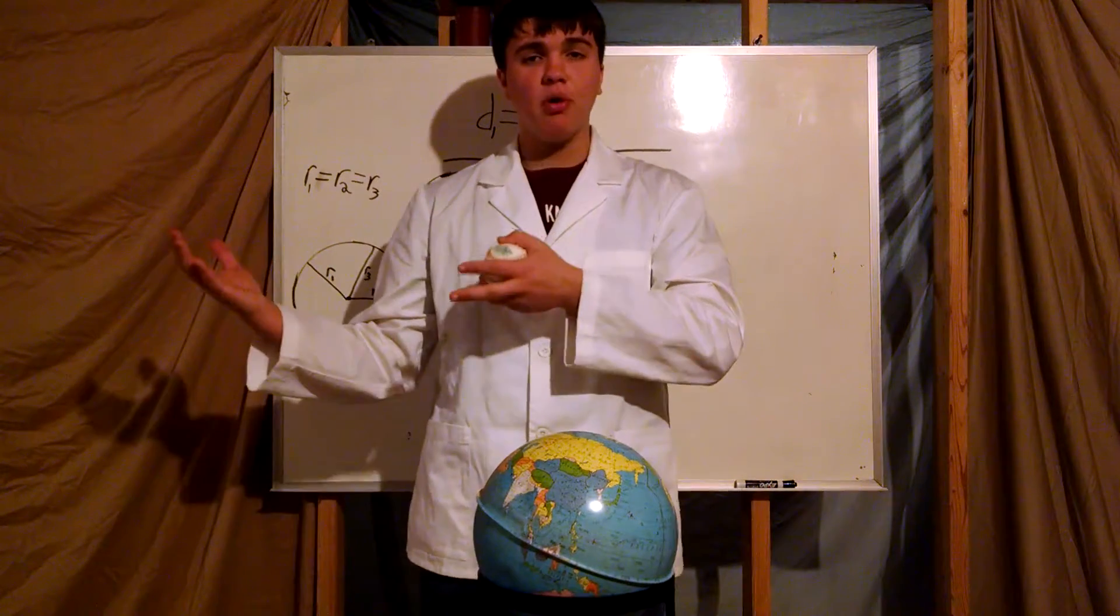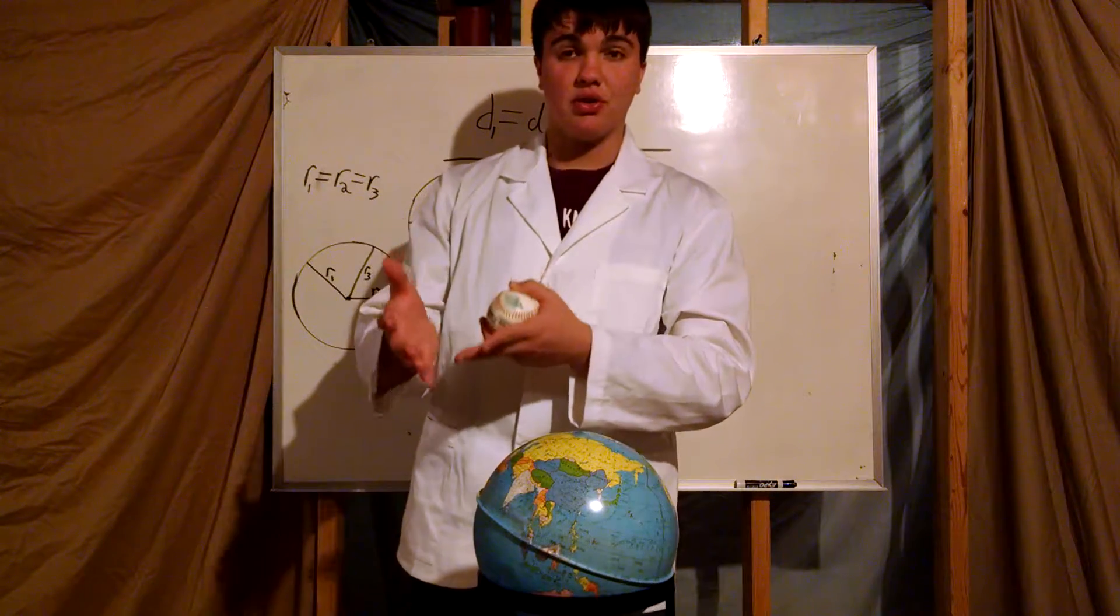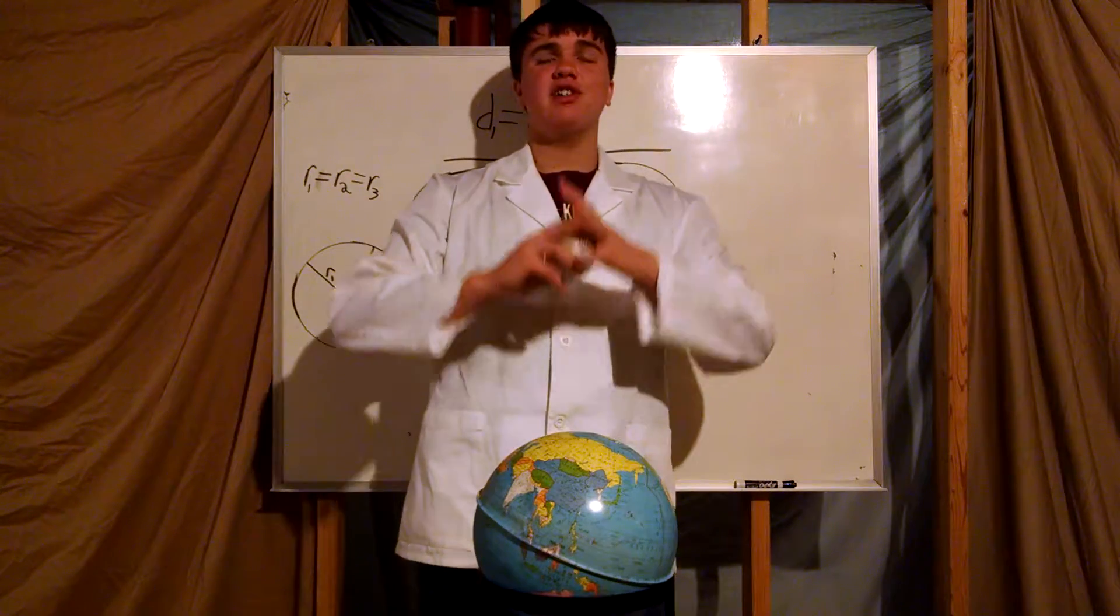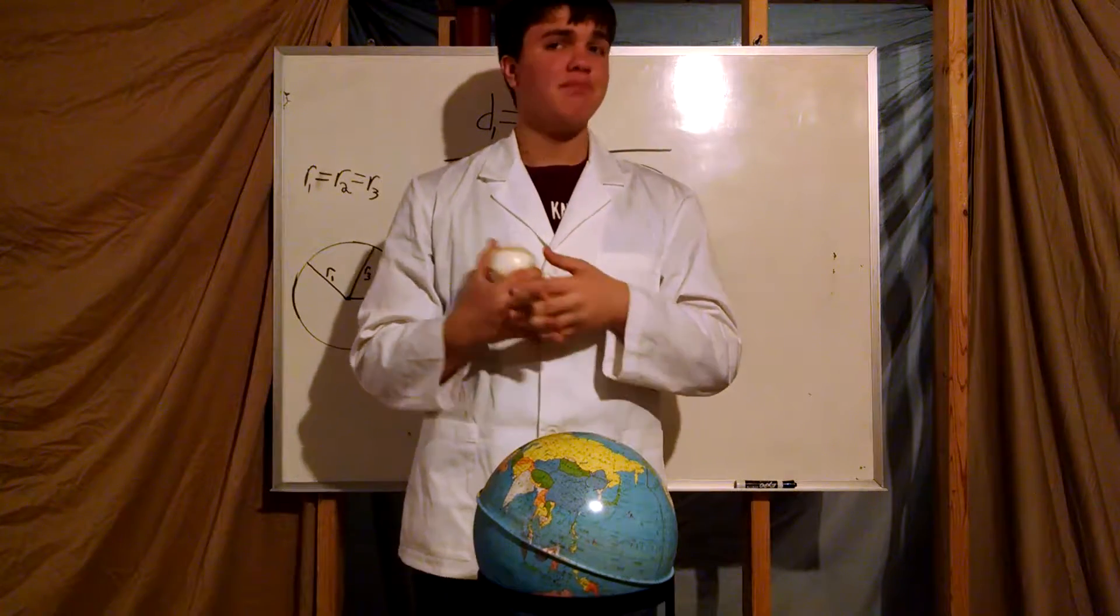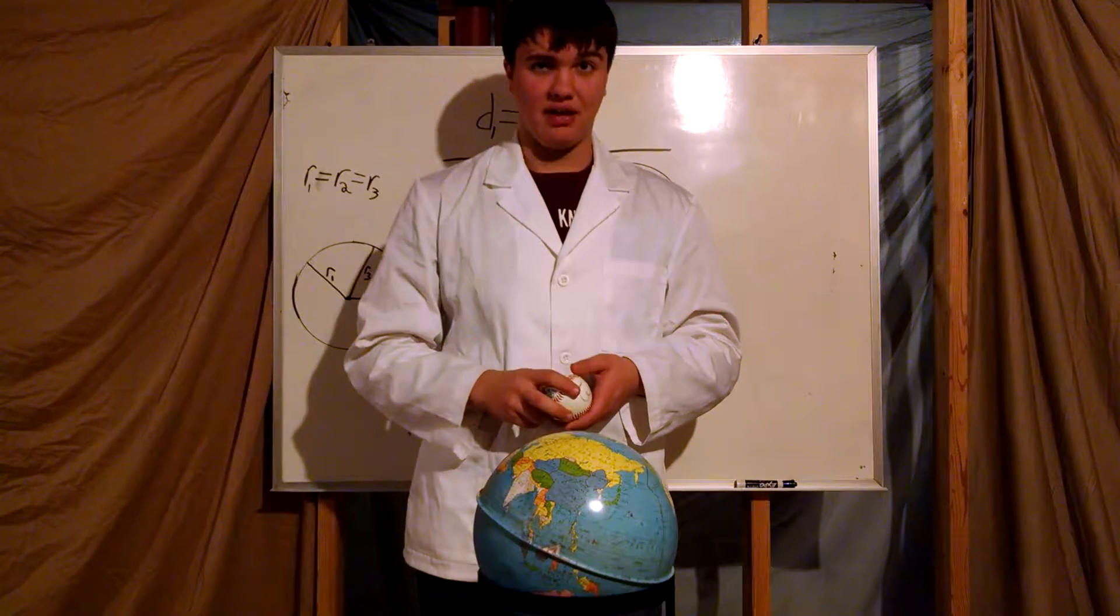So, a supermoon, therefore, is as close as the moon can be when it's during a full moon. And so, therefore, it is 30 times brighter in the sky than a micromoon, which means I'm staying up to watch the entire thing.